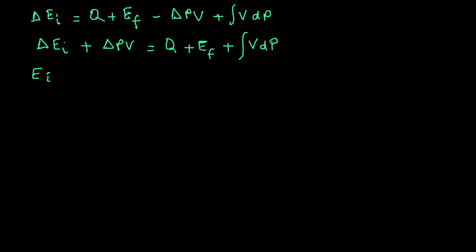So we can write a little more expanded expression as EI,2 minus EI,1, so that's the final internal energy minus initial internal energy, plus P2V2 minus P1V1, referring to the exit and inlet conditions, equals Q plus EF plus integral VdP.